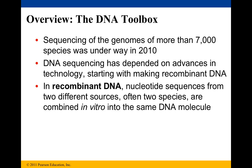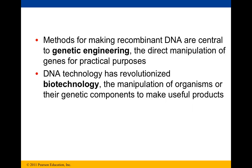The sequencing of genomes of more than 7,000 species was underway in 2010, and more than a decade after, we've seen a lot of developments in the study of the genome of a number of species. DNA sequencing has depended on advances in technology, starting with making what we call recombinant DNA. In recombinant DNA, nucleotide sequences from two different sources, often two species, are combined in vitro into the same DNA molecule. Methods for making recombinant DNA are central to what we call genetic engineering, or the direct manipulation of genes for practical purposes.